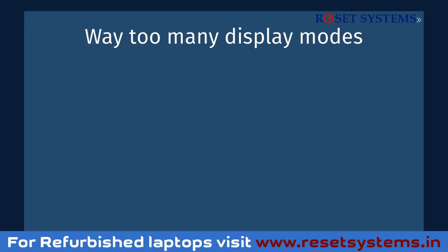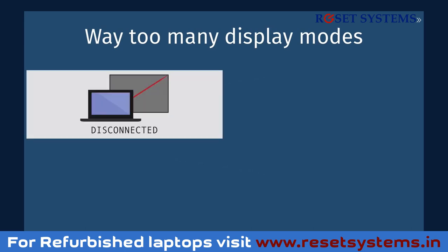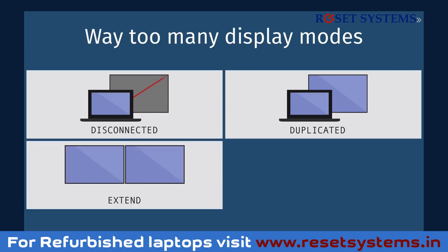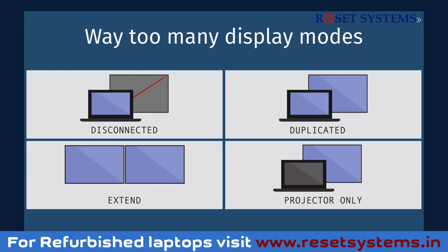When you connect a projector to a Windows laptop, you get four display modes. First: disconnected — so you think nothing works. Second: duplicated, which is like mirrored and great for demos. Third: extend, where you get two different images like arranged mode. And finally what I call the panic attack mode: projector only — your laptop goes dark and your panic goes to a hundred percent.